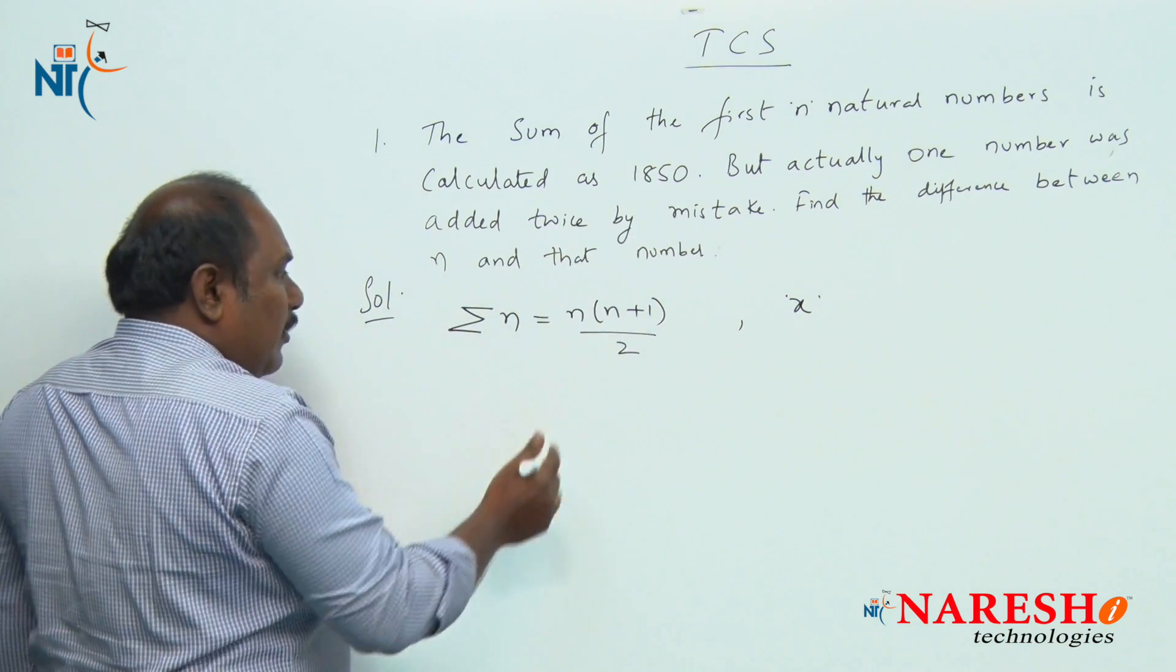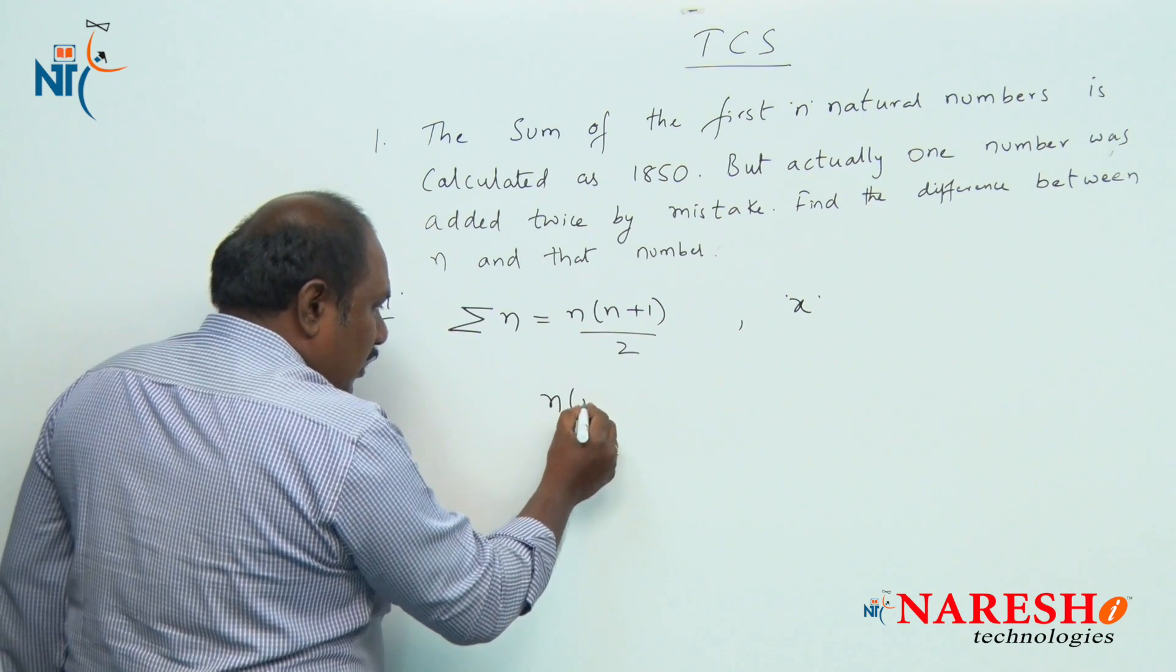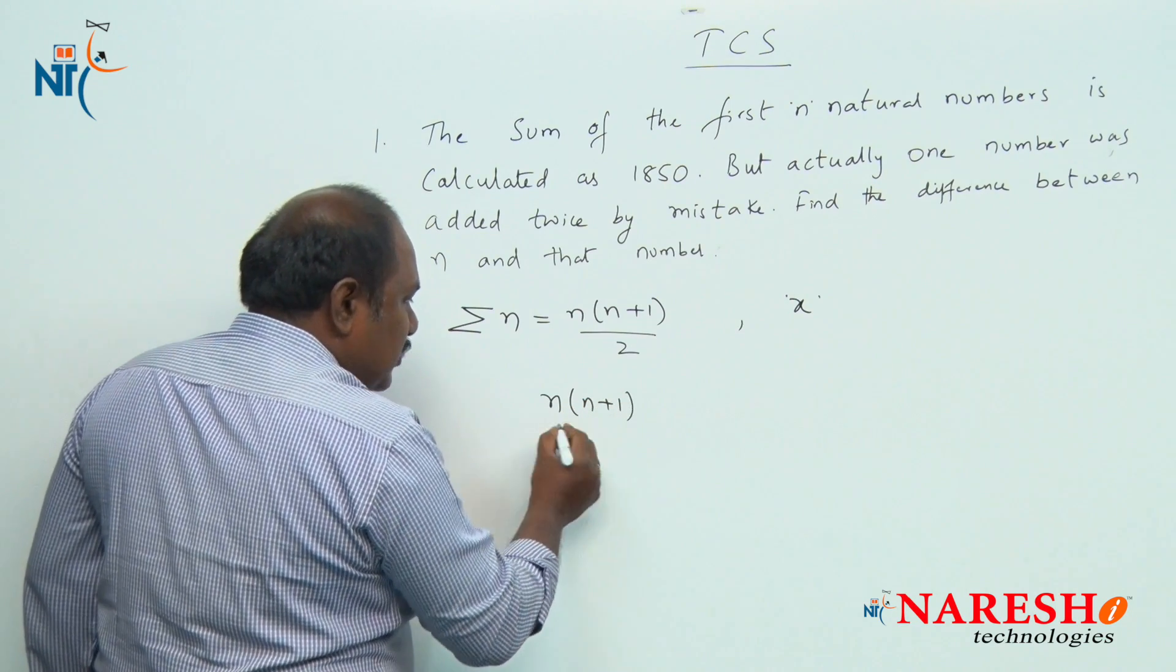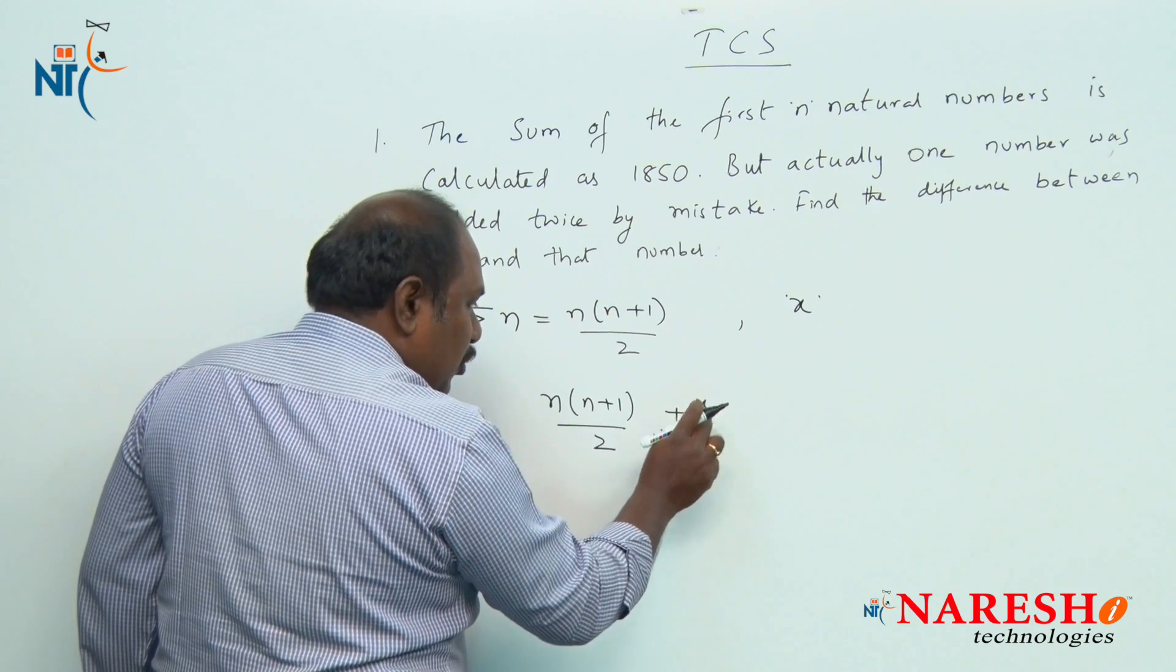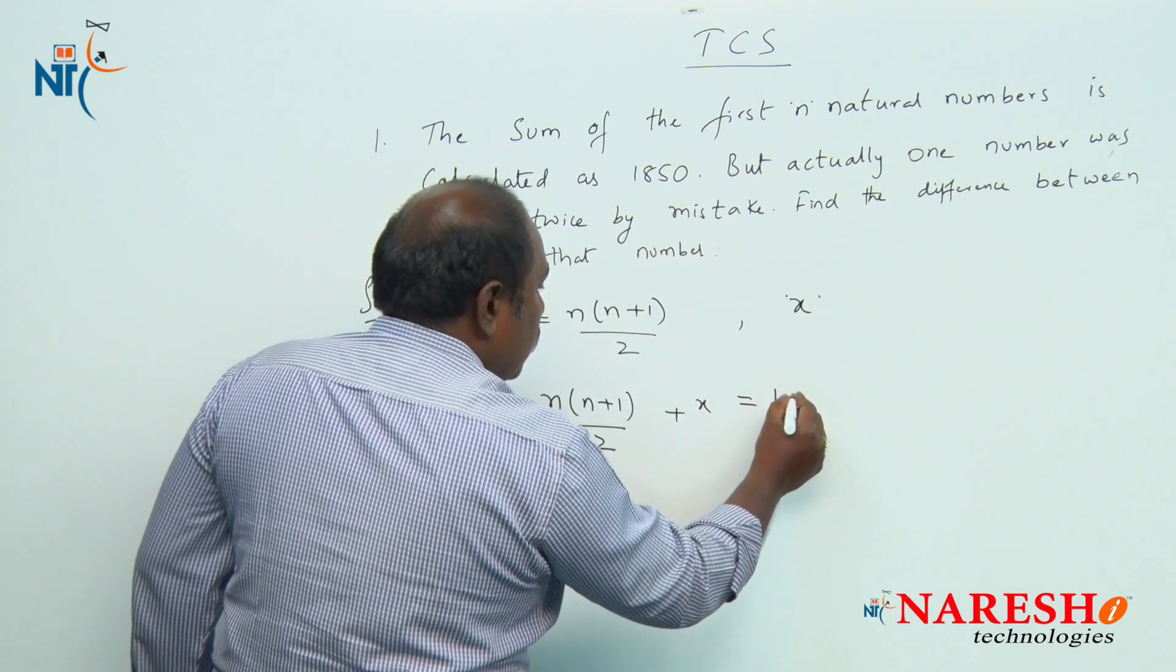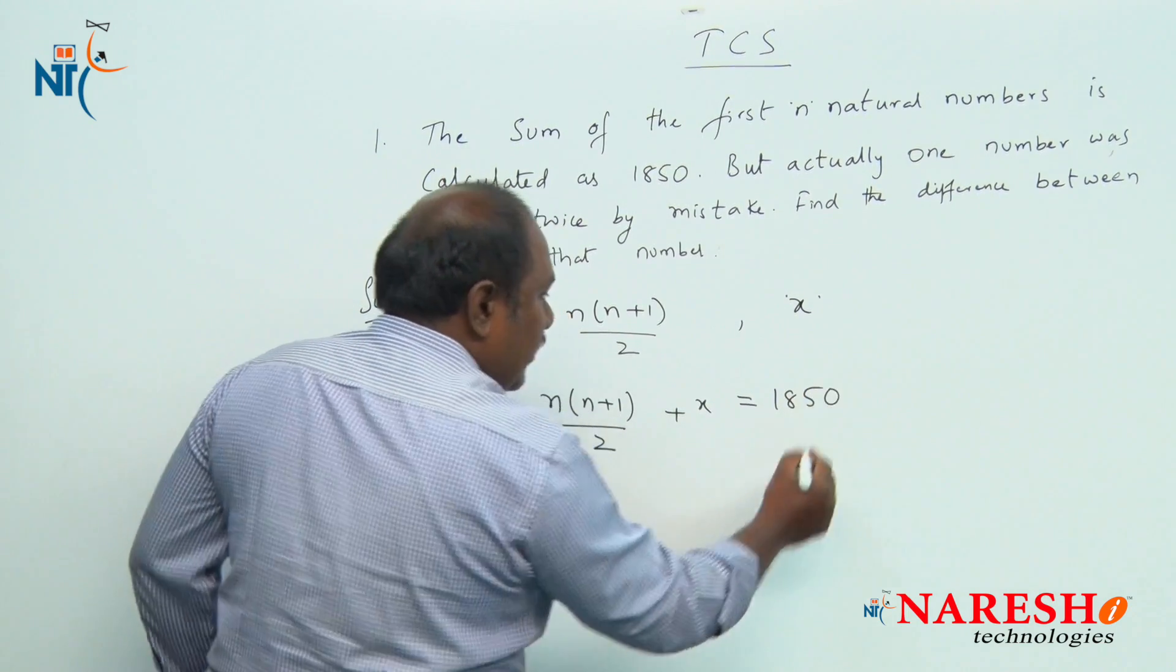According to the given question, we can write n into n plus 1 by 2 plus the number which is added twice, it should be equal to 1850.